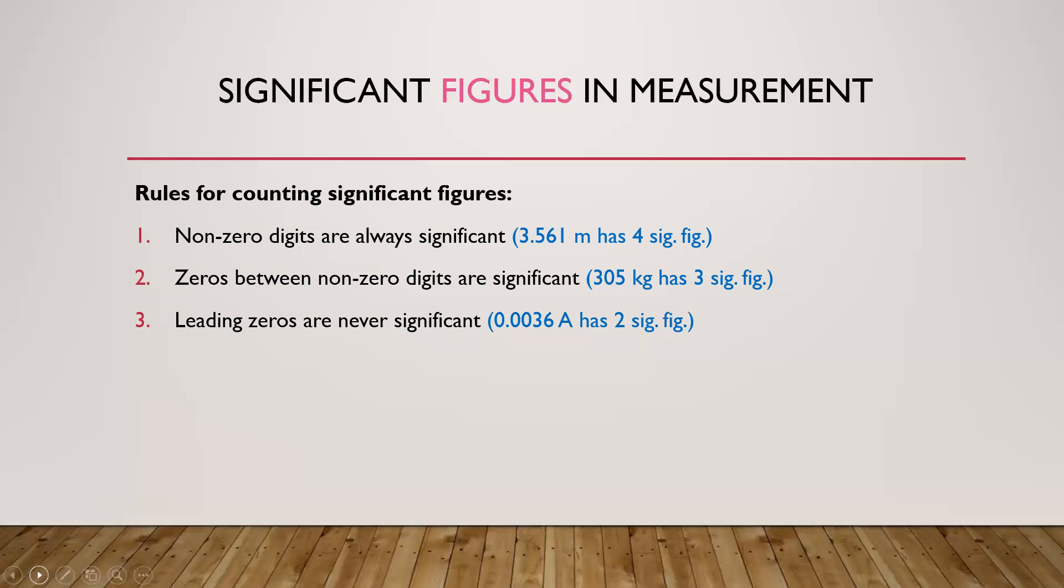Lastly, rule number 4: Trailing zeros are only significant if the number has a decimal. For example, 980 seconds has 2 significant figures whereas 68.0 milliliters has 3 significant figures.